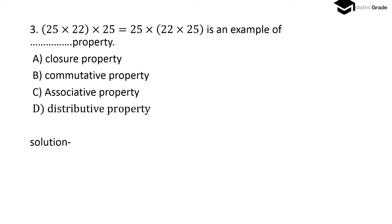Question number 3: (25 × 22) × 25 = 25 × (22 × 25) is an example of which property — closure, commutative, associative, or distributive? This is the associative property, where regrouping the parentheses does not change the result. So option C, associative property, is the correct option.